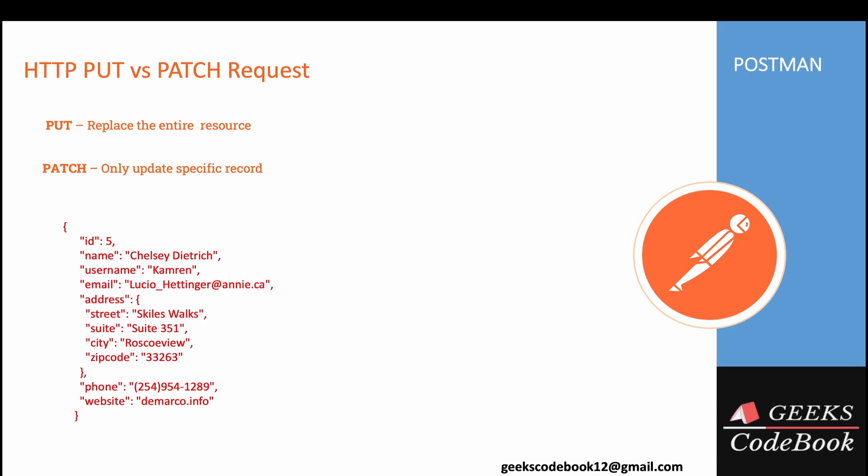PUT and PATCH are both used to update a resource, but there is a fundamental difference. With PUT, you replace your entire resource. With PATCH, you only update the specific field or record you want to update.